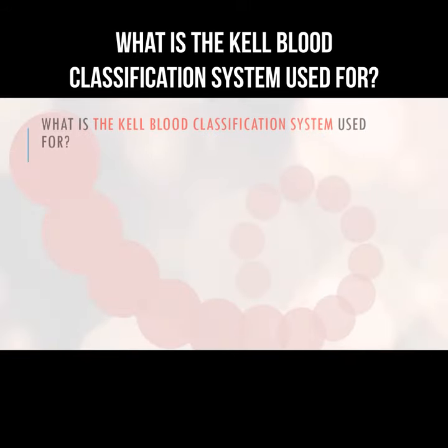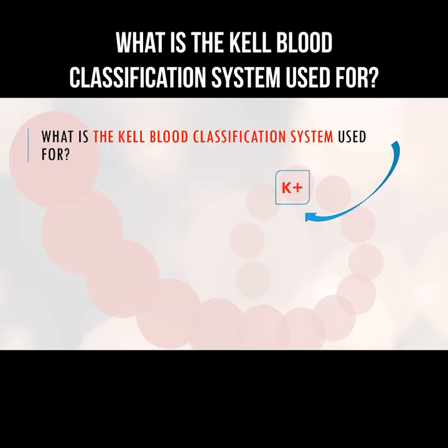The KEL blood classification system refers to the presence or absence of the K antigen, which has been found in pregnant women and in humans after a transfusion.